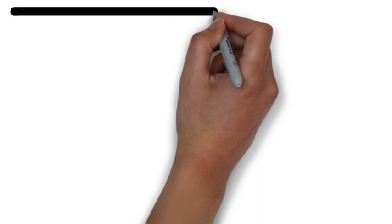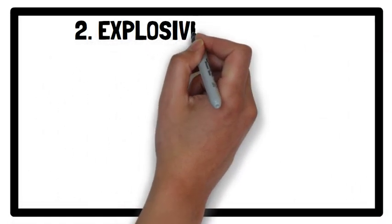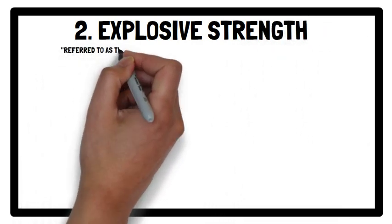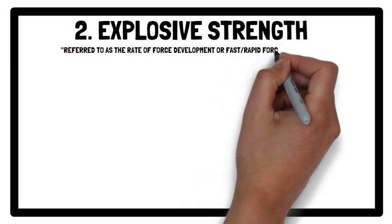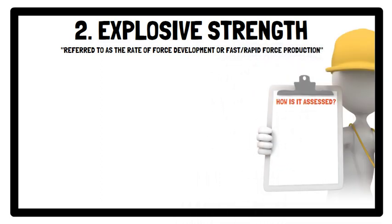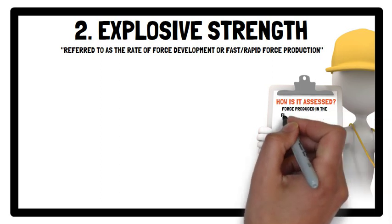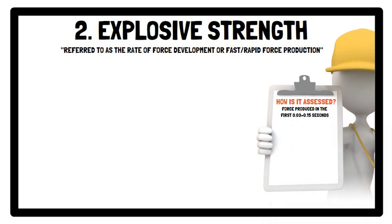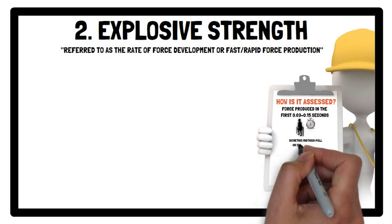Moving on to the second strength quality: explosive strength. In research settings, this is typically referred to as the rate of force development or fast force production. It is determined by the force produced within the first 0.03 to 0.15 seconds during an isometric mid-thigh pull or isometric squat.